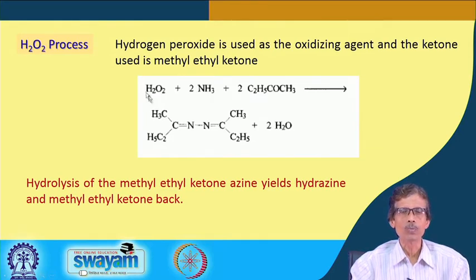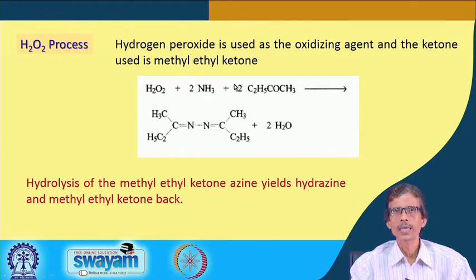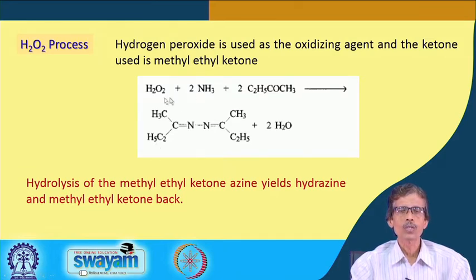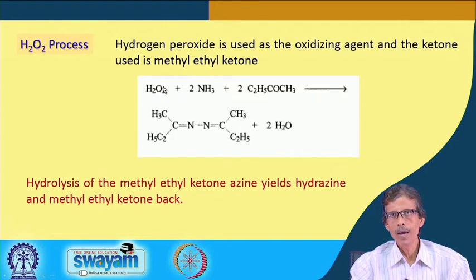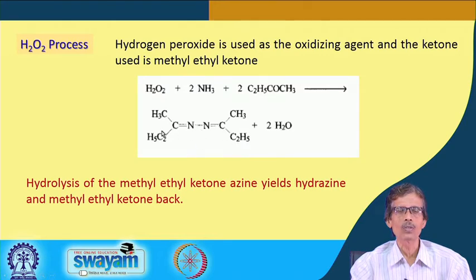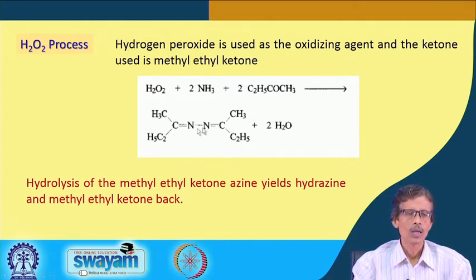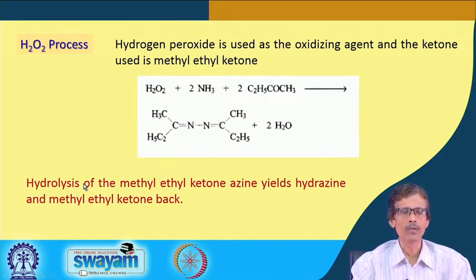We can directly use hydrogen peroxide as the oxidizing agent with ethyl methyl ketone. In the Bayer process, acetone or ethyl methyl ketone can be used due to its different type of stability as an unsymmetric ketone. Instead of forming NaCl (as with hypochlorite), hydrogen peroxide gives only water as byproduct while oxidizing NH₃ to form the di-azine of ethyl methyl ketone. Hydrolysis of the methyl ethyl ketone di-azine then yields hydrazine and the corresponding ketone back.